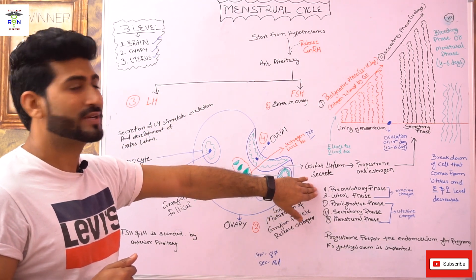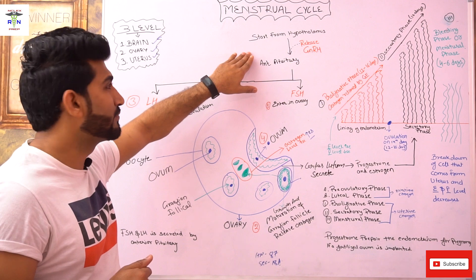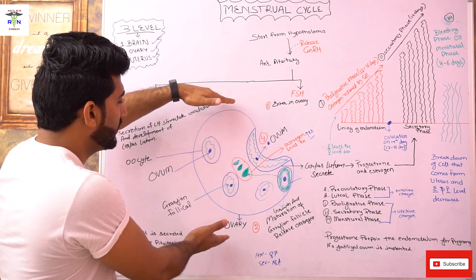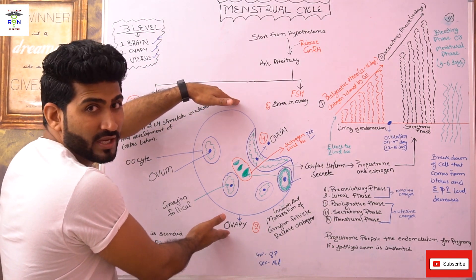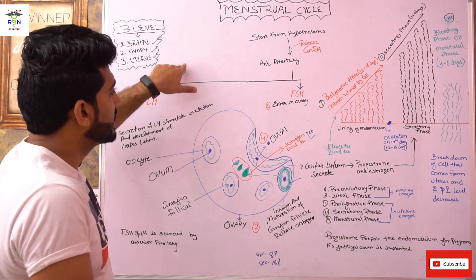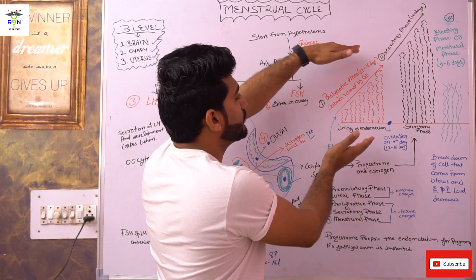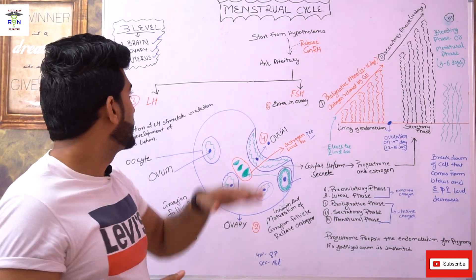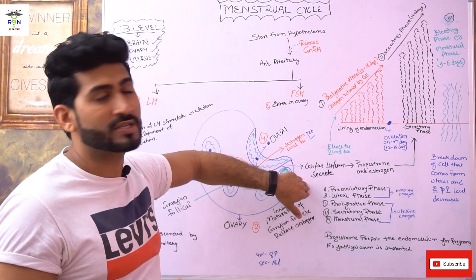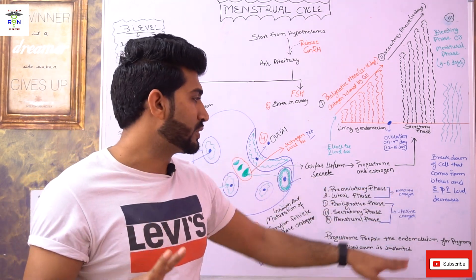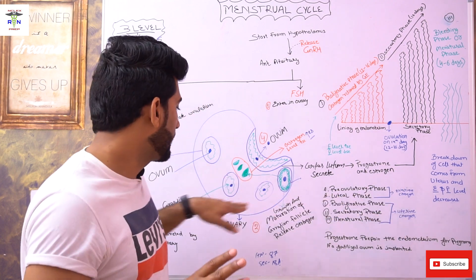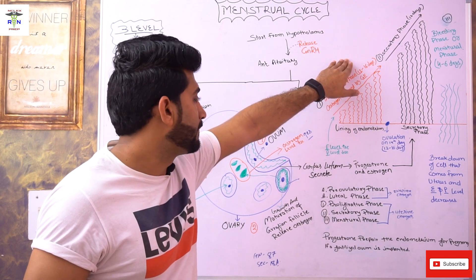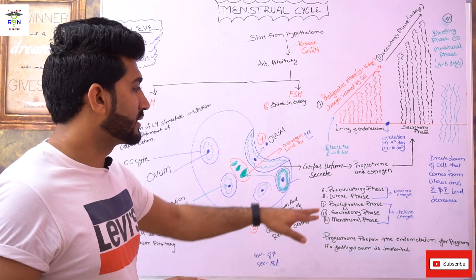The menstrual cycle has three levels and five phases. Level one is the brain — it starts from the hypothalamus. Level two is the ovary, where multiple changes occur during the menstrual cycle. Level three is the uterus, where changes occur in the uterine lining. There are two main basic phases: ovarian changes and uterine changes.